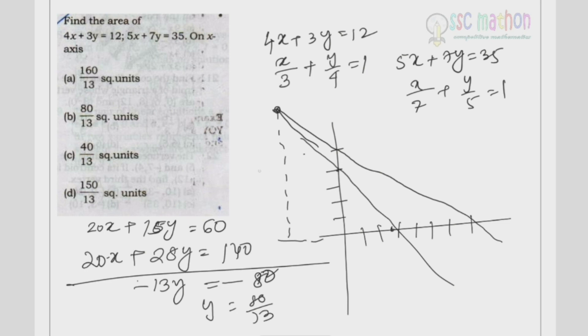If y = 80/13, then the height of the triangle is 80/13 and the base is 4, because here the point is 3, 0 and here is 7, 0. Then the area is 1/2 × 4 × 80/13 = 160/13 square units. Option number A.